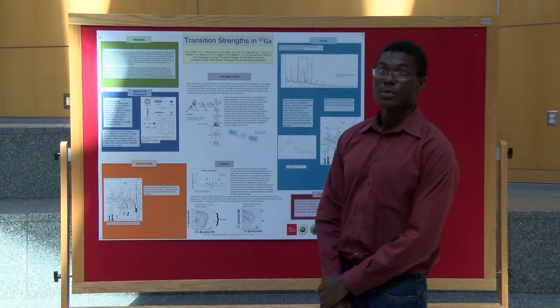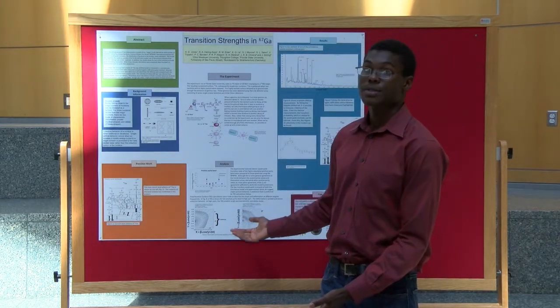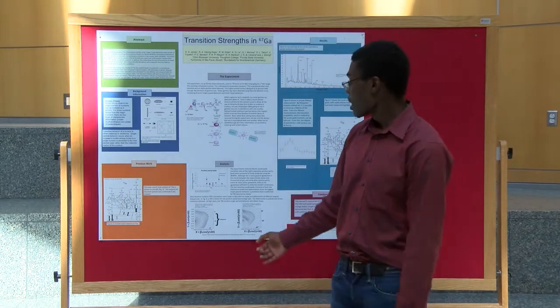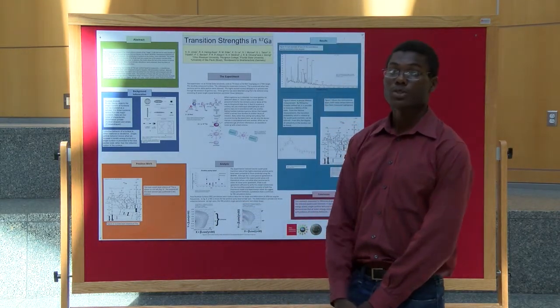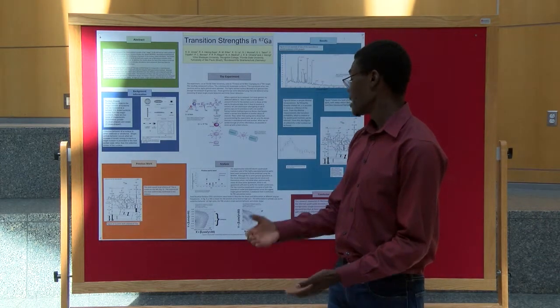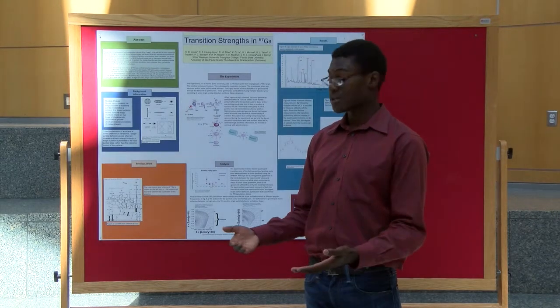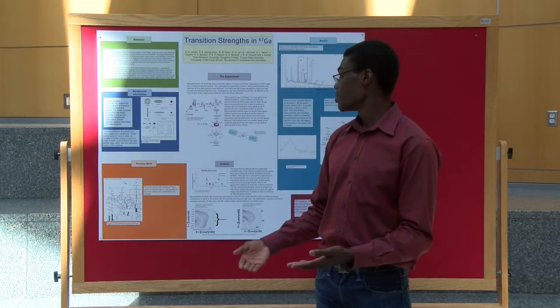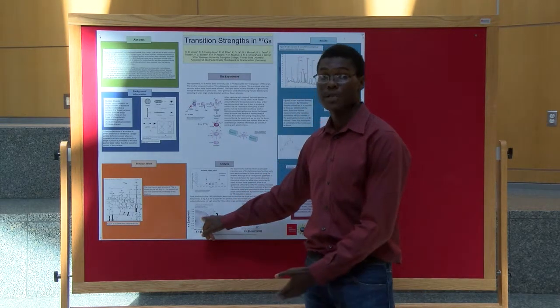However, there are still things that we can gain from these different measurements. We can tell using total Routhian surface plots, which are plots of the electric potential of the nucleus, the predicted structure of the nucleus. You see here, this dot is the predicted structure at low spin.